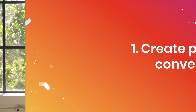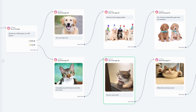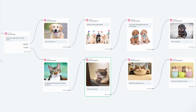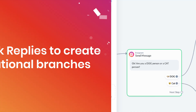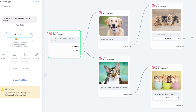Here are a few tips to help you get started. 1. Create personalized conversations by building different conversational branches. 2. Use quick replies to create these branches, which gives Instagram users the option on how they want to interact with your brand.